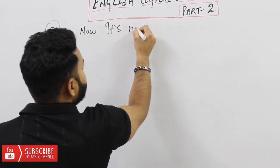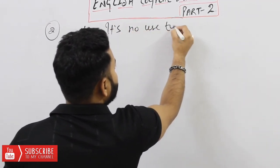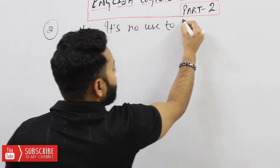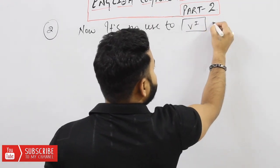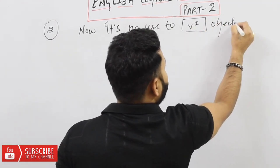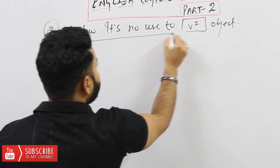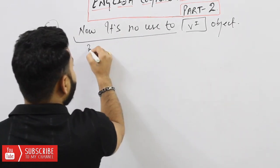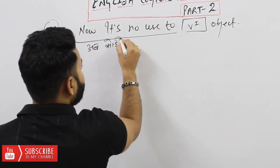Now the second logical: 'Now it's no use to' — इसके आगे भी हम अपनी first form लगाएंगे, then object. इस logical का मतलब होता है: अब कोई फाइदा नहीं।